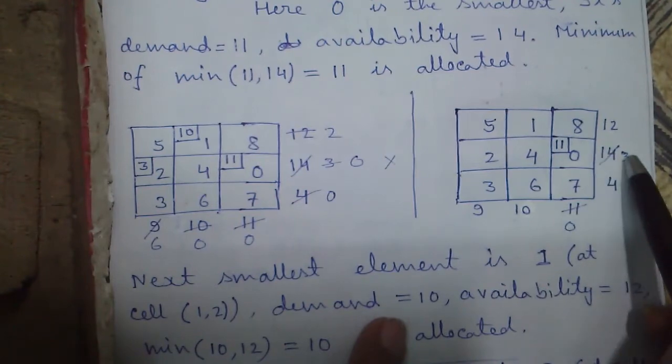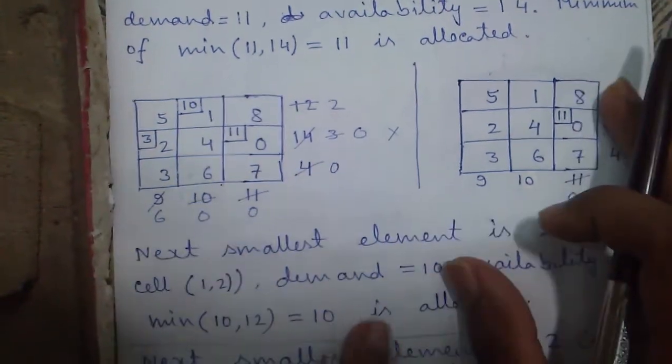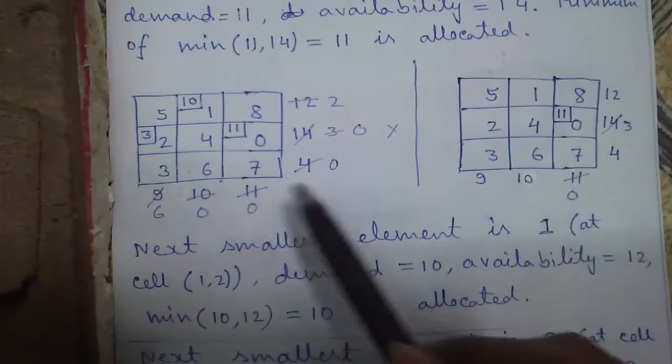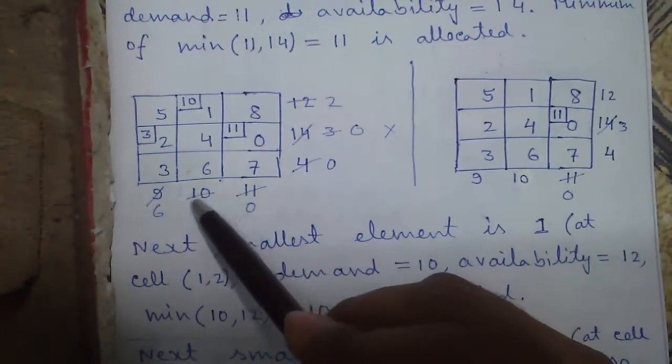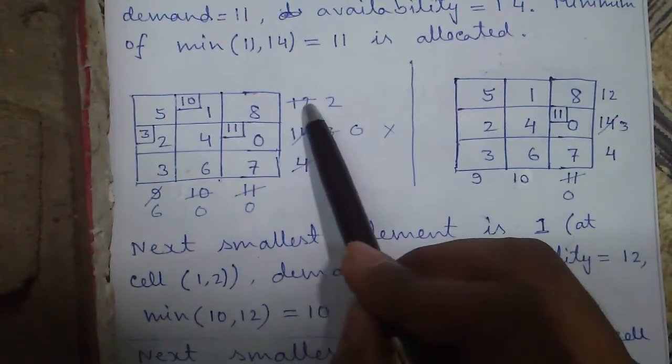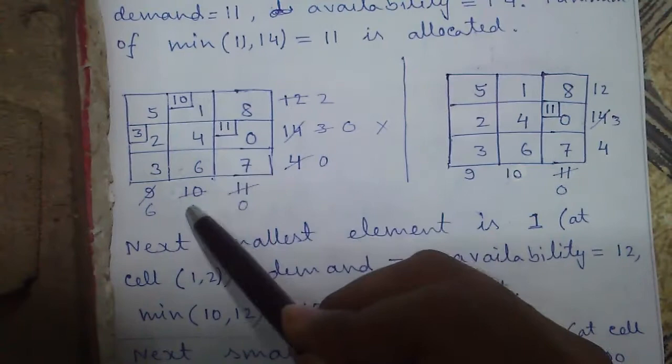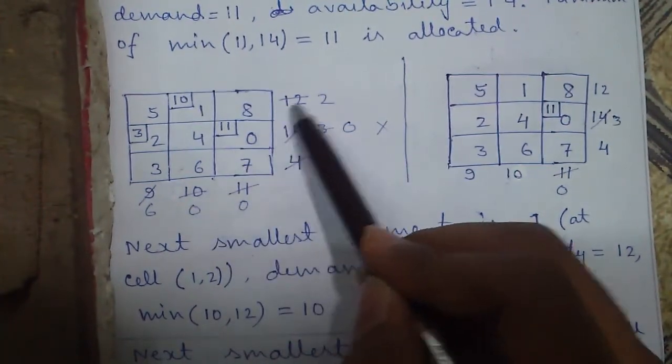Again same process, next smallest element is 1 and against 1 we have demand of 10 and supply of 12. So we allocate 10 at this location. After allocation demand will be 0 and supply will be 2.